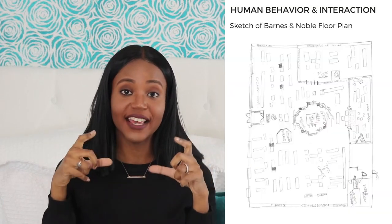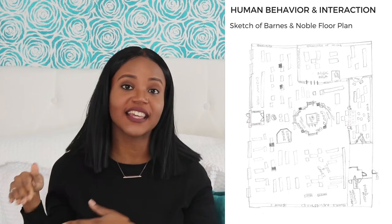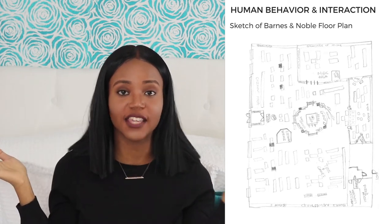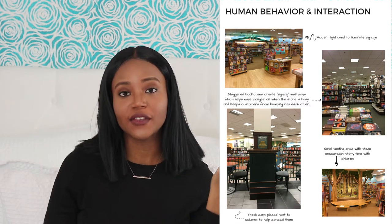I went to Barnes & Noble, took pictures, and had to sketch out a floor plan — I literally sat in their little café section and drew a hand sketch of all the bookcases, where the music section was, where the gift section was, where the games were. I had to look at varying ceiling heights, what kind of lighting they were using, where all the outlets were located, and then infer how the space was supposed to function. I'll insert some photos of Barnes & Noble and the notes I took. I then had to present those findings to my class.